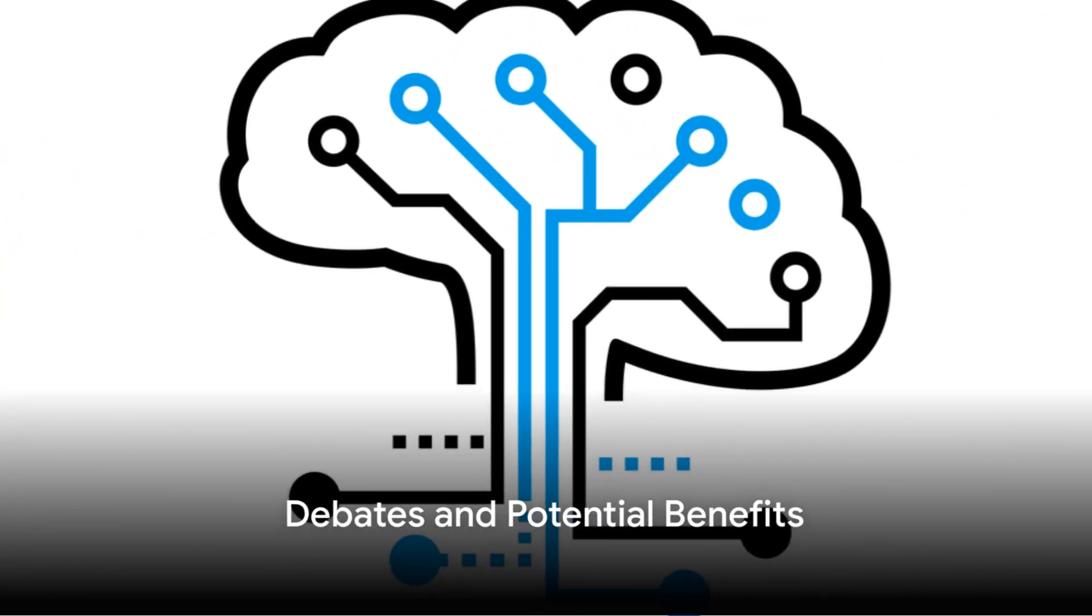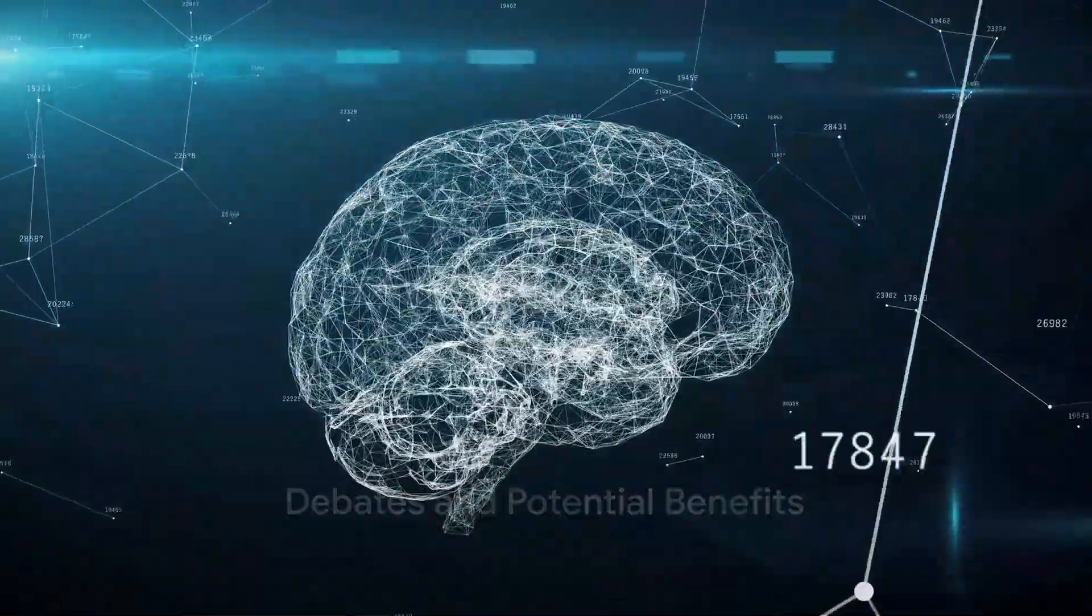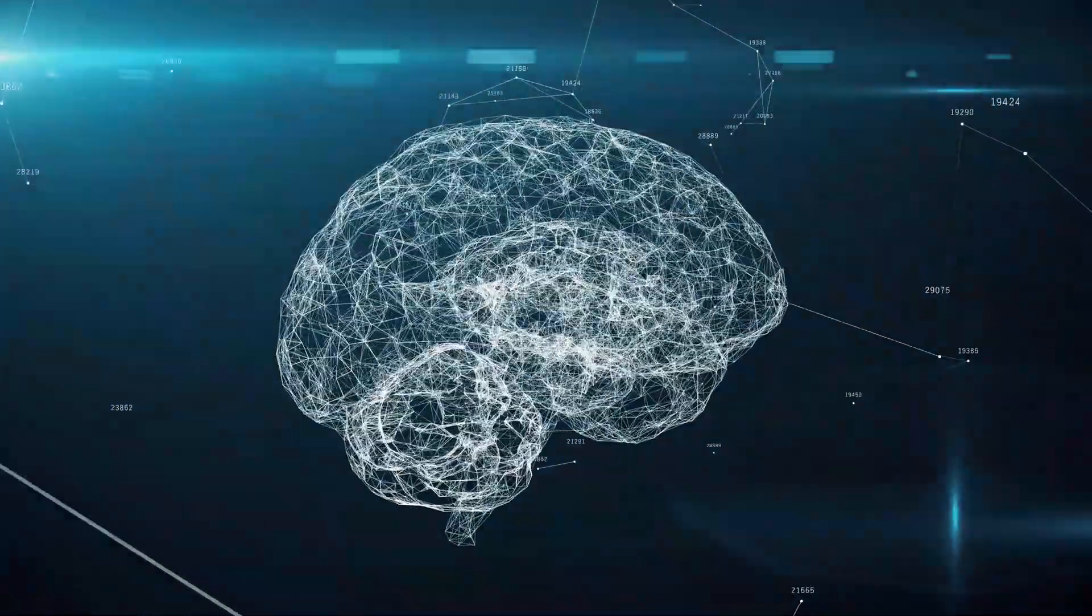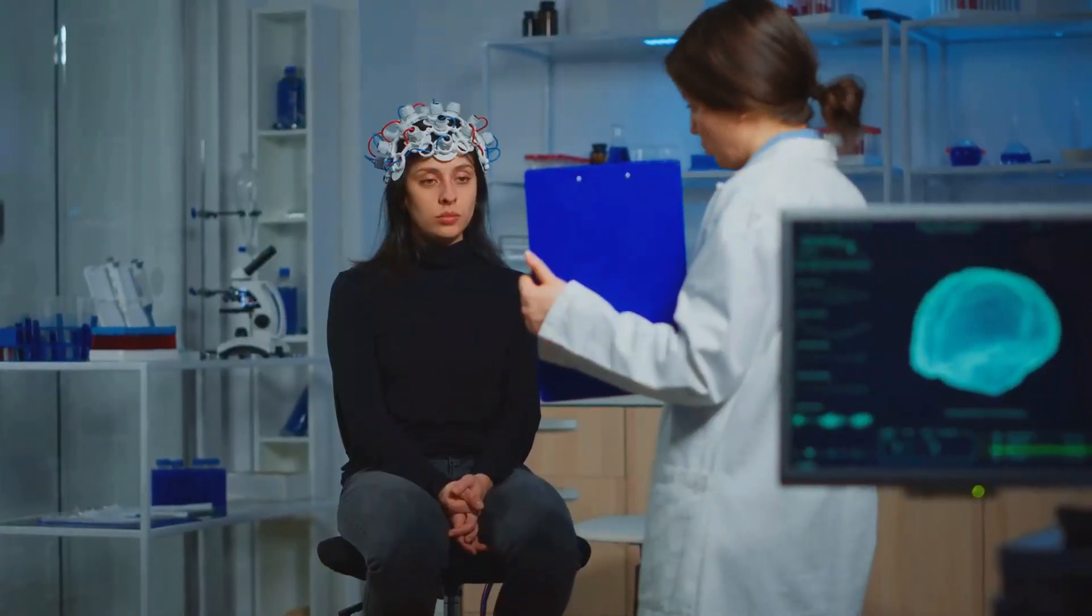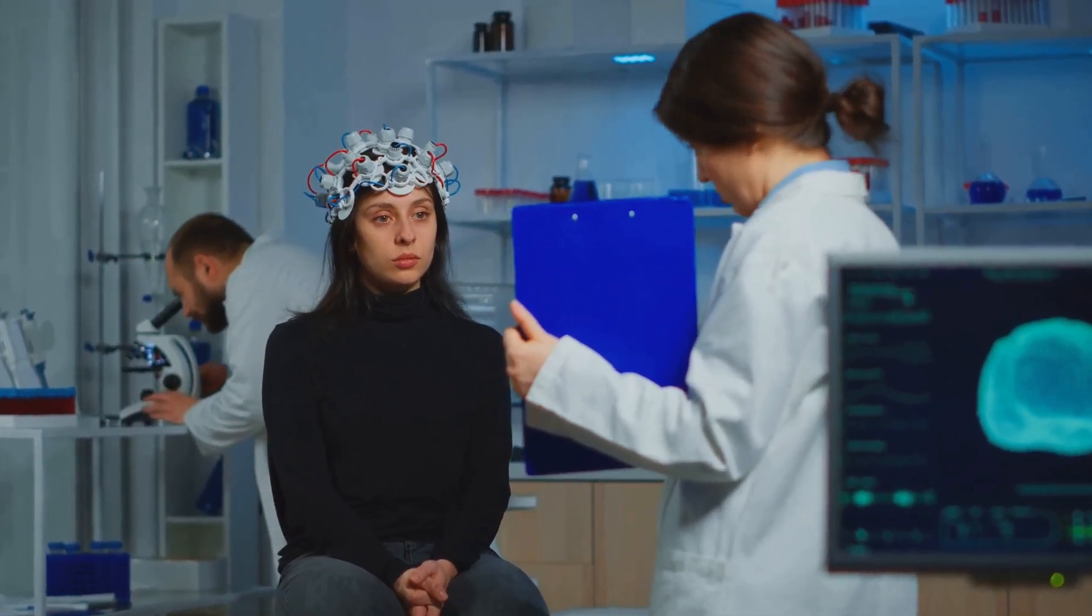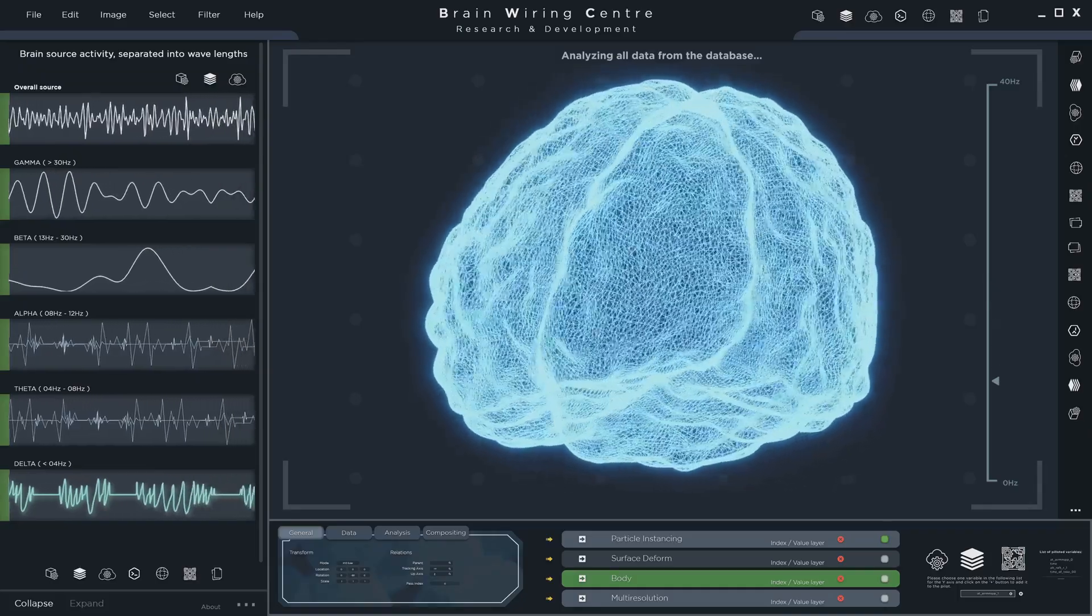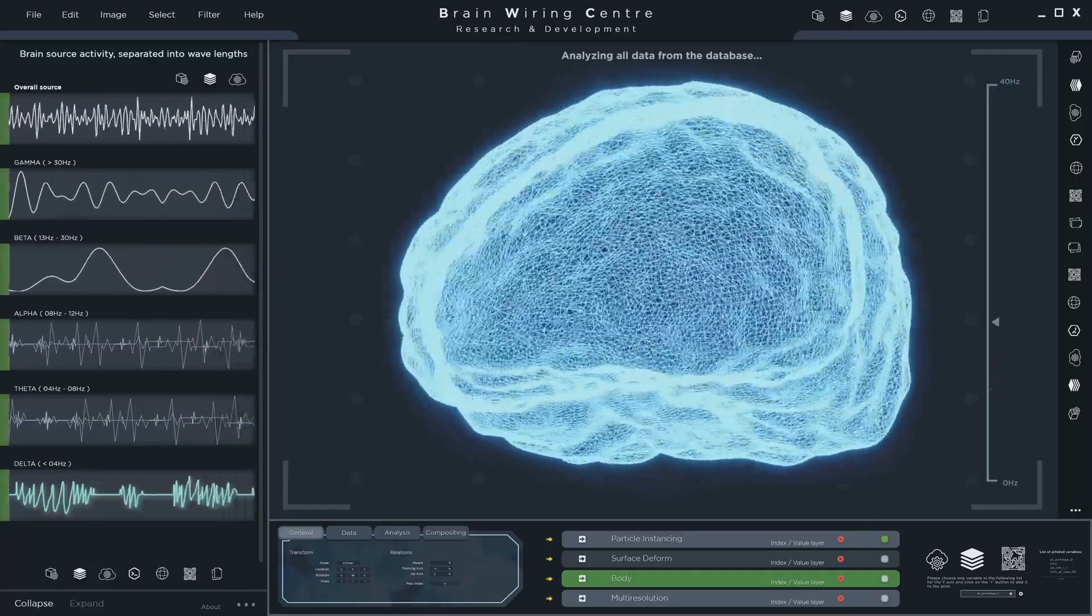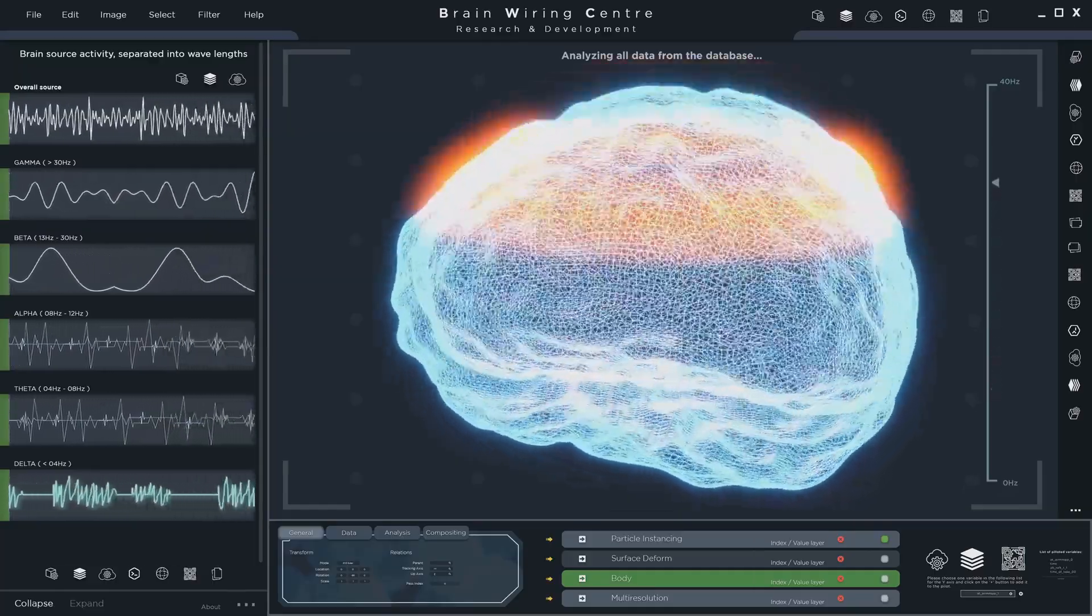The rise of neurotechnologies like Neuralink sparks debates about class divides and the regulation of brain data. However, it also offers potential benefits in treating conditions such as depression and epilepsy. While most companies focus on therapeutic treatments, Musk suggests a wider application for enhancing human function.